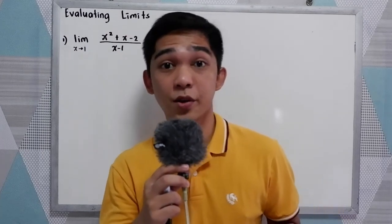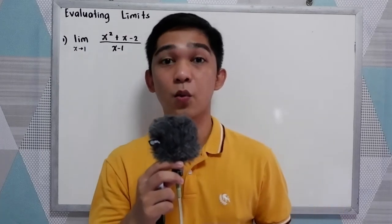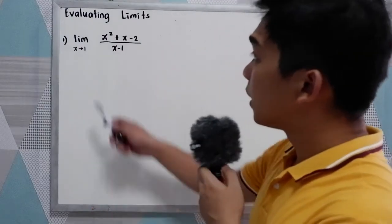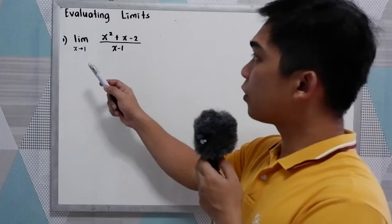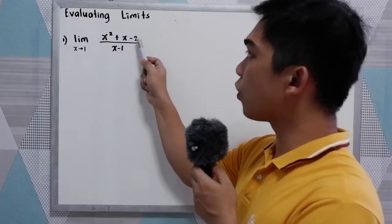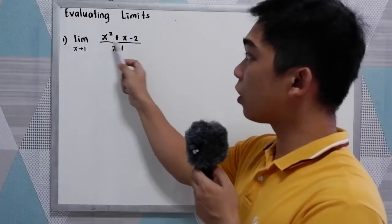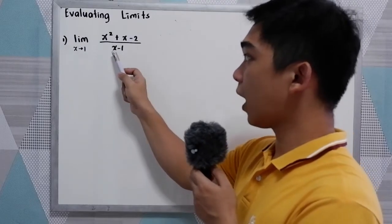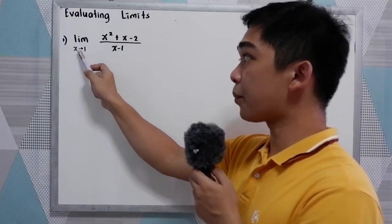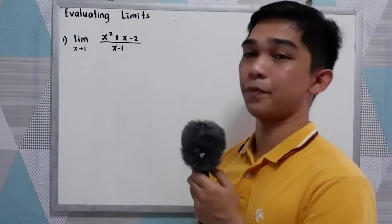Good day everyone. In this tutorial video, we're going to evaluate limits. So let's have our first example: the limit of x squared plus x minus 2 all over x minus 1, as x approaches 1.